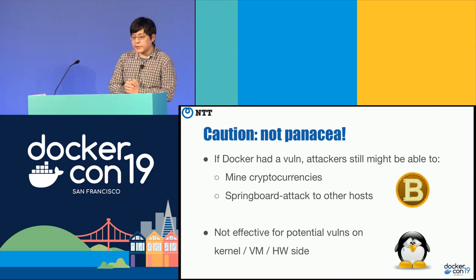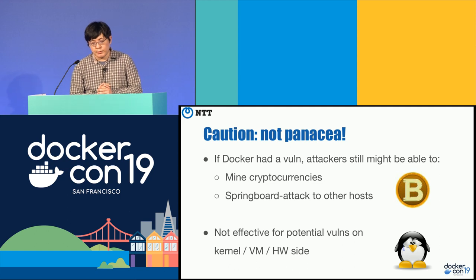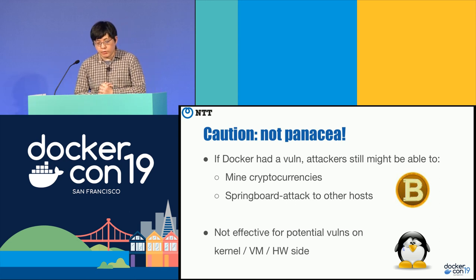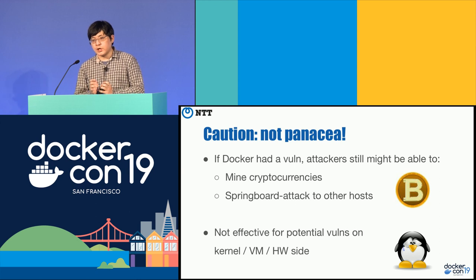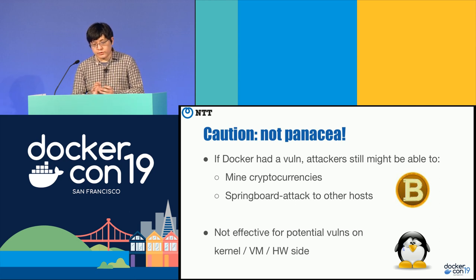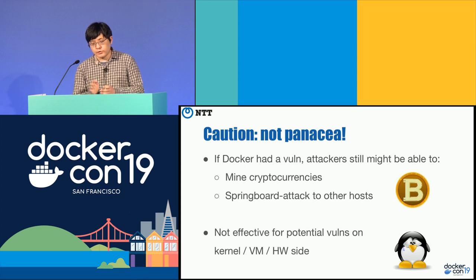But rootless Docker is not a panacea. If Docker has a vulnerability, an attacker might still be able to mine cryptocurrencies such as Bitcoin, or conduct a springboard attack — gaining control of your host and using it to attack other hosts on the internet to hide their real IP address. In the worst case, you might get arrested because police would think you attacked other hosts since your IP address was used.